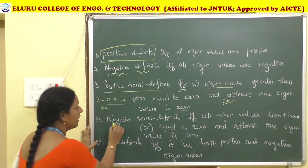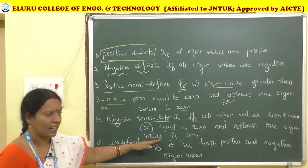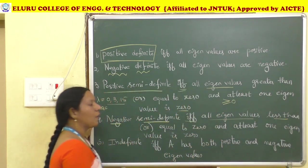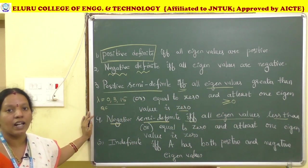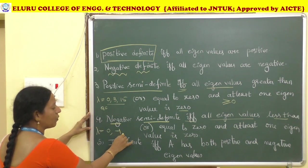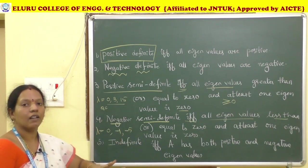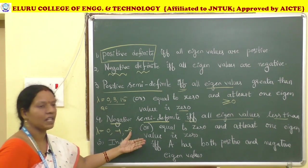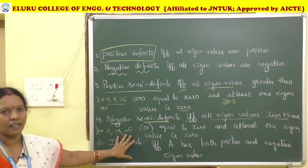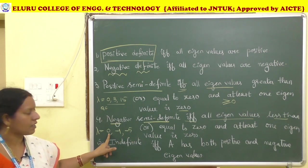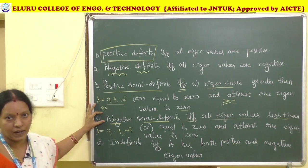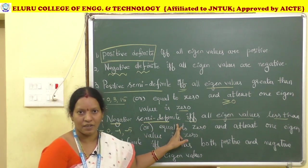Negative Semi-definite: if and only if all eigenvalues are less than or equal to zero and at least one eigenvalue must be zero. For example, eigenvalues like 0, -1, -5 — one zero must exist and the remaining are all negative — then the given quadratic form is negative semi-definite.